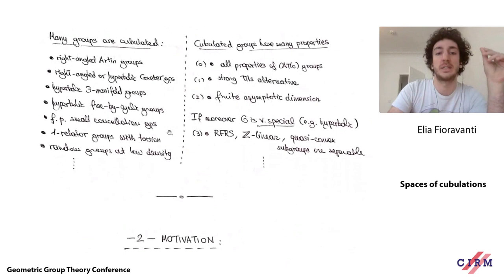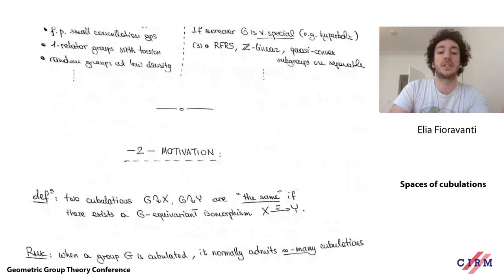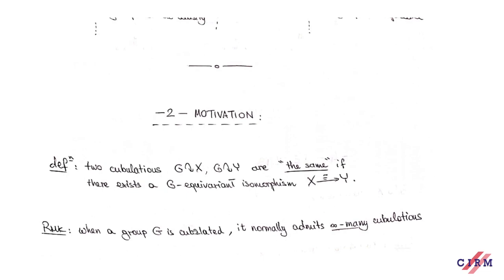This is perhaps the reason why there's such a long list of groups known to be cubulated — because if a group does admit a cubulation, it is relatively easy to construct one and show that the group is cubulated. This is because there are so many cubulations, so constructing a cubulation is quite a flexible procedure. You don't have to arrange things too precisely; many things will result in a cubulation.